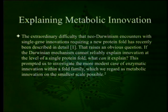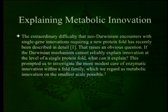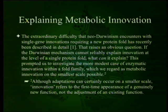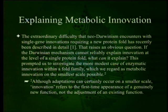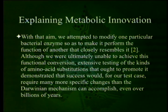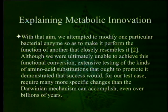That raises an obvious question: if the Darwinian mechanism cannot reliably explain innovation at the level of a single protein fold, what can it explain? This prompted us to investigate the more modest case of enzymatic innovation within a fold family, which we regard as metabolic innovation on the smallest scale possible. Innovation refers to the first-time appearance of a genuinely new function, not the adjustment of an existing function. With that aim, we attempted to modify one particular bacterial enzyme to make it perform the function of another that closely resembles it. Although we were ultimately unable to achieve this functional conversion, extensive testing demonstrated that success would require many more specific changes than the Darwinian mechanism can accomplish even over billions of years.